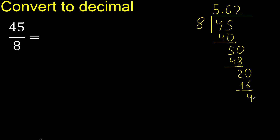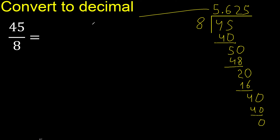Subtract, complete 40. 8 multiplied by 5 is 40. 40 minus 40 is 0. Therefore finish here.